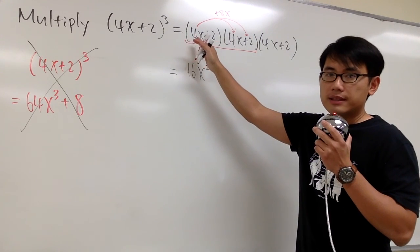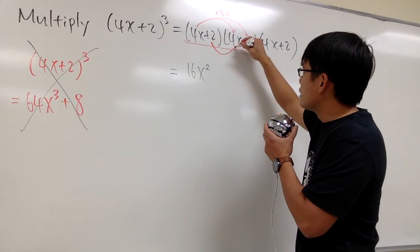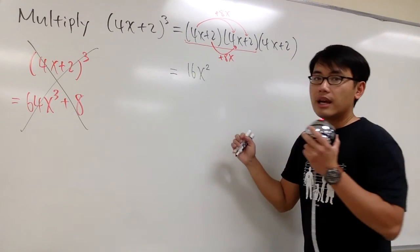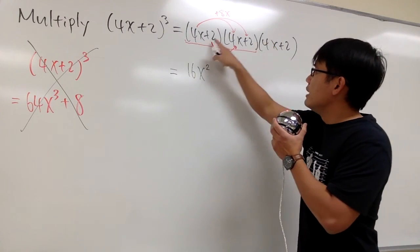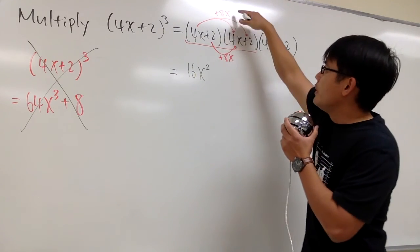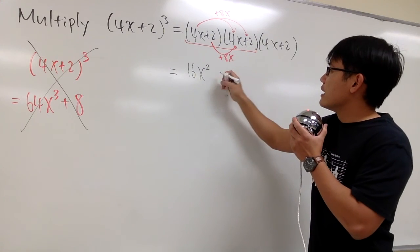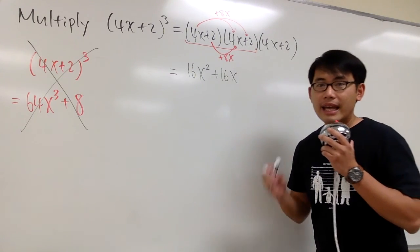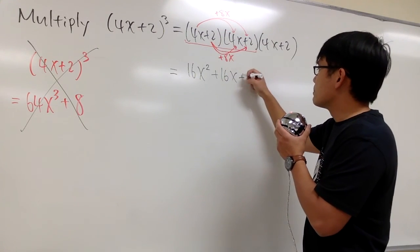And then we are done with this 4x, we move to the next one, the 2. Take the 2 and multiply with this 4x, that's another positive 8x. And the reason I put the outer product and the inner product in this order is so that we can combine like terms. 8x plus 8x gives us plus 16x. At the end, we have 2 times 2, and that will give us positive 4.